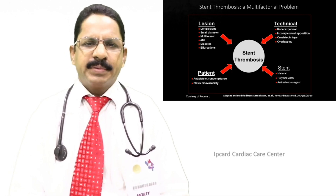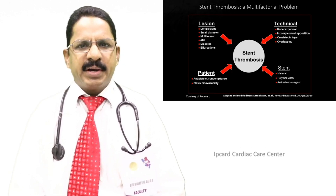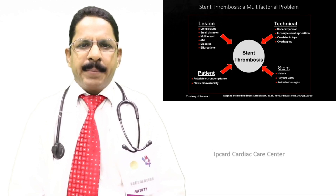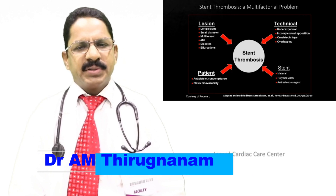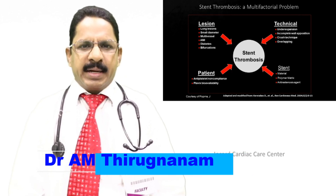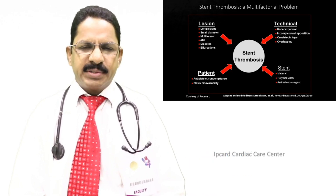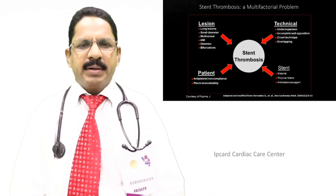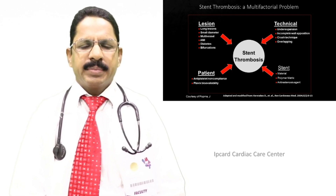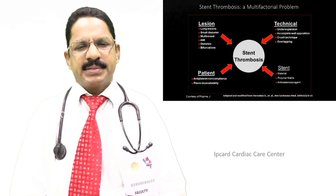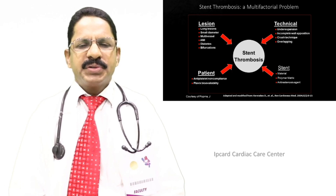We have different types of stent restenosis apart from coronary artery restenosis. Peripheral vascular stent restenosis is also very common — for example, renal artery restenosis, lower limb artery restenosis, and subclavian and carotid vessel restenosis are very common due to implanted stents.